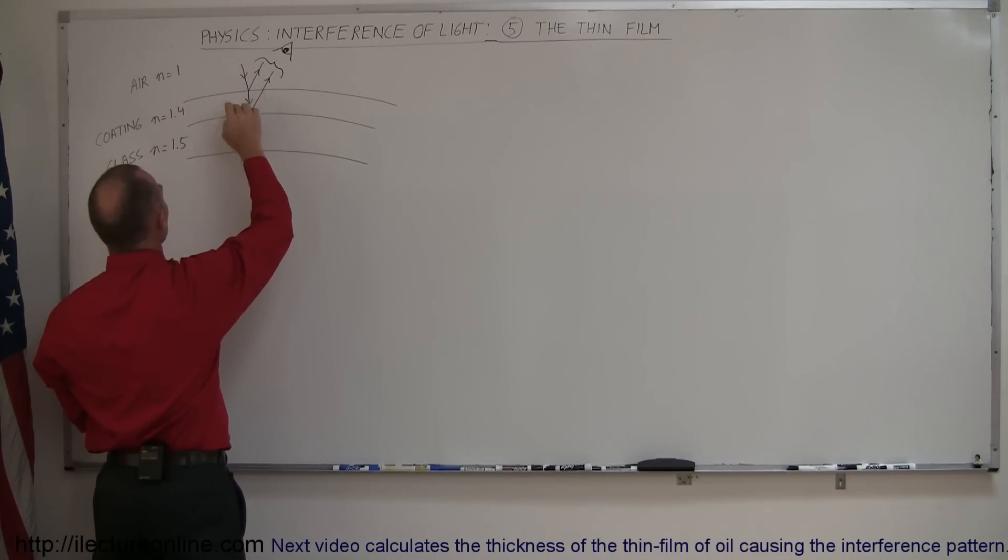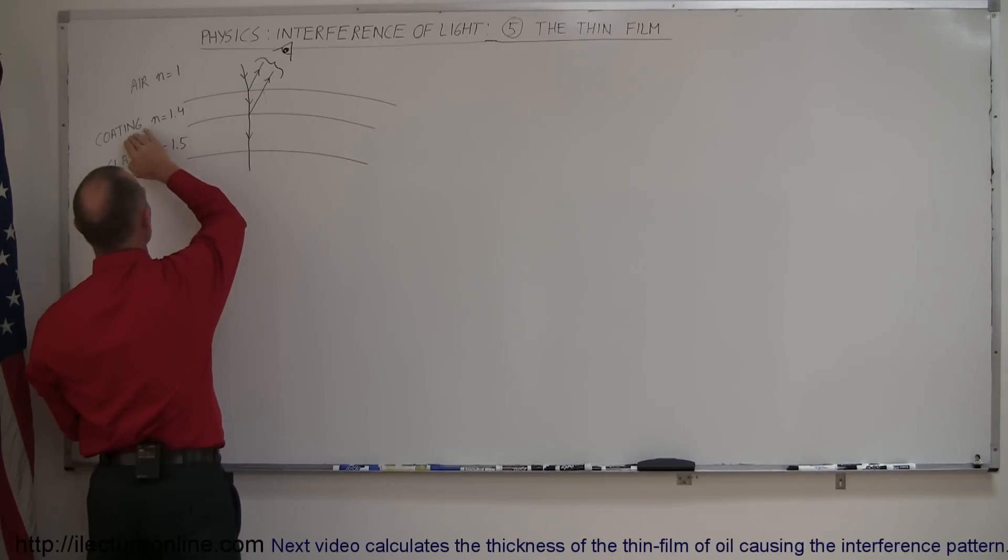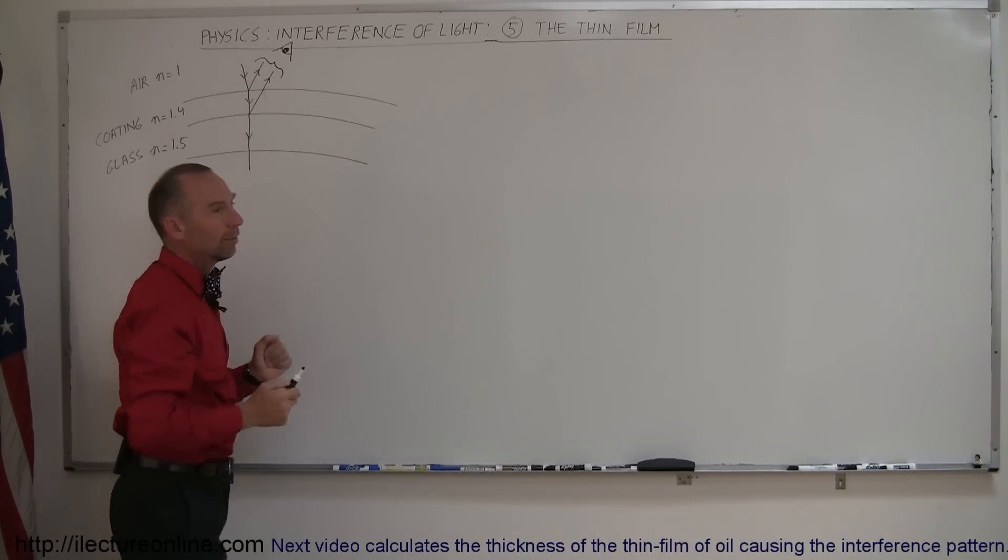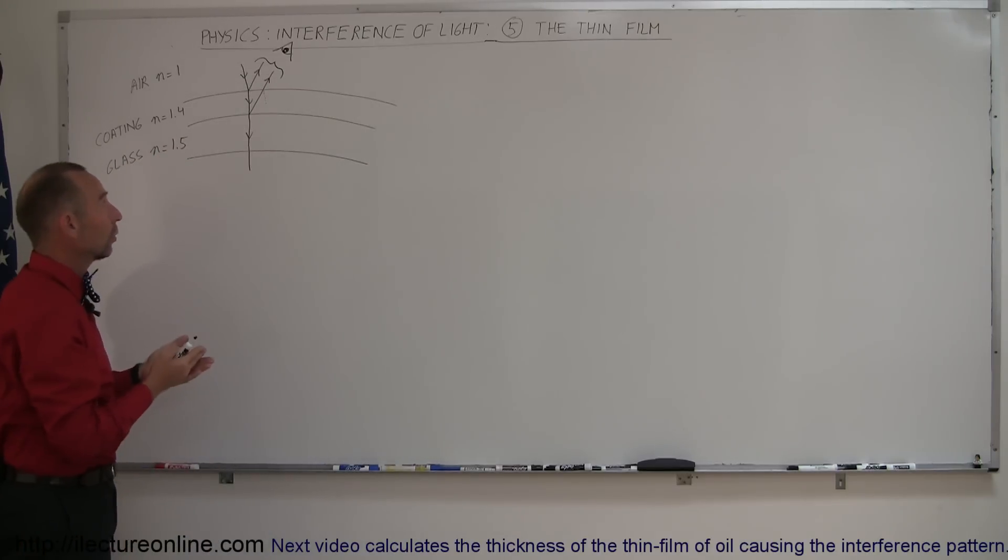And then we're going to look at the reflected light that comes off the boundary between the coating and the glass. And when those two beams come together, they can either interfere, well, they will interfere with each other, but they can either have constructive or destructive interference.